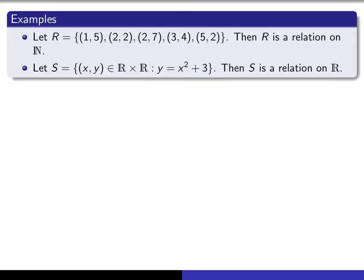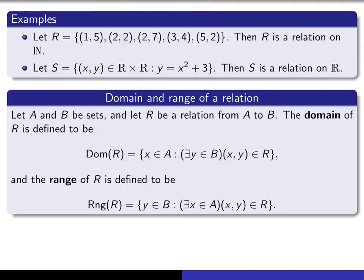An ordered pair (x, y) is in that relation provided the components satisfy this particular equation. Now we can define what we mean by the domain of a relation and the range of a relation. But before I go into the formal definition, let's look at an example.